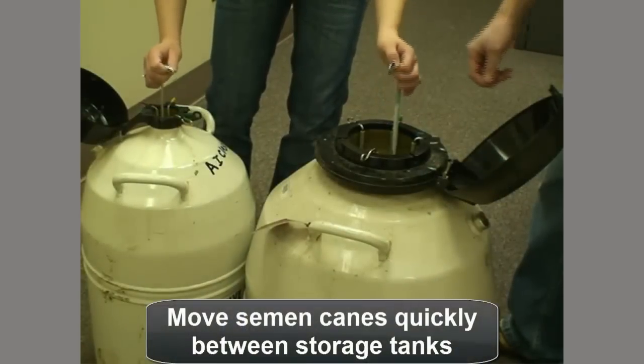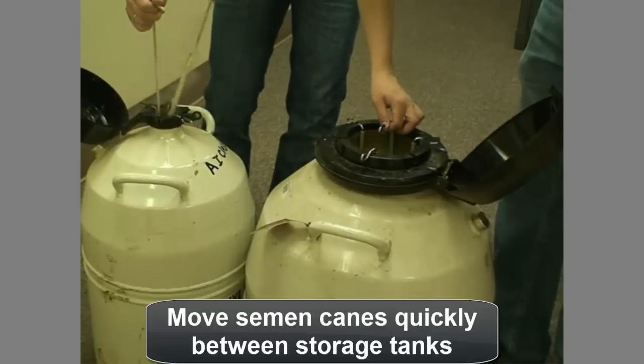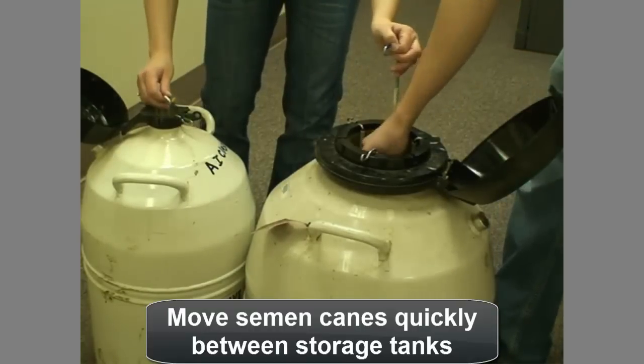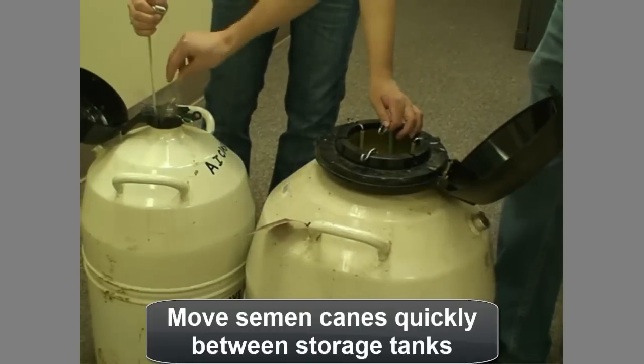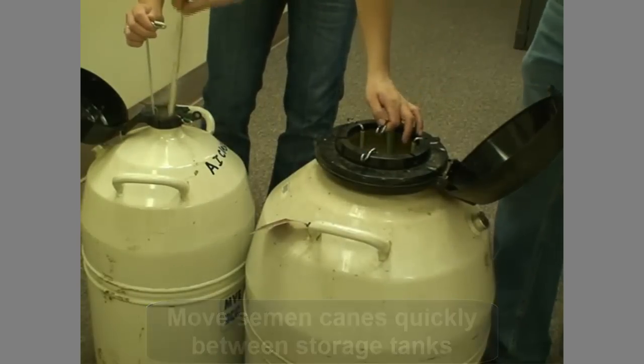When transferring semen between tanks, have the tanks side by side and full of nitrogen. With the appropriate canister in the center position in each tank, transfer the canes quickly, within three to five seconds. Do not touch the semen straws with bare hands in this process.